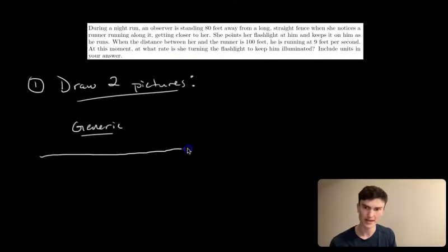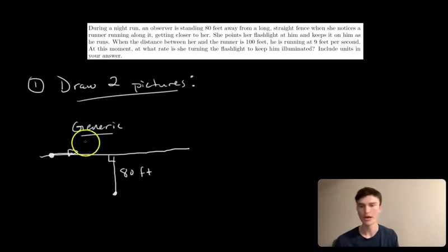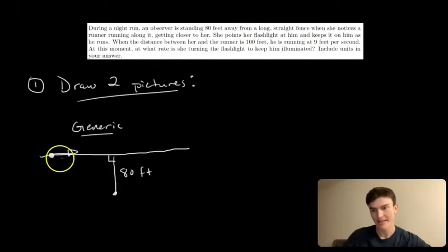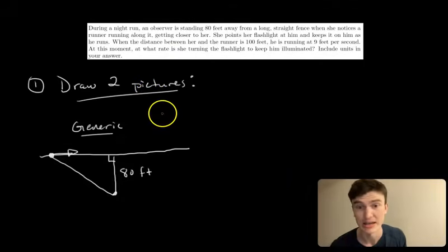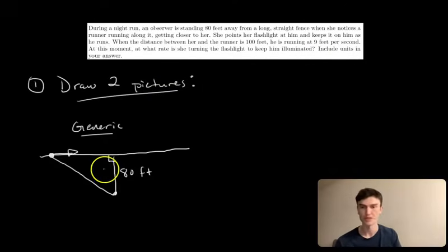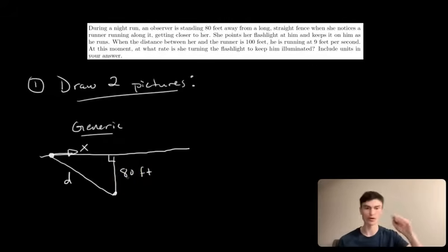For our generic picture: there's a long fence with someone running along it. An observer stands 80 feet from the fence — that's a right angle — shining a flashlight at the runner. The flashlight direction forms the hypotenuse of a right triangle. We label the horizontal leg X, the hypotenuse D for distance between the two people, and 80 feet is constant so we just write 80.